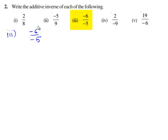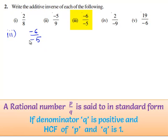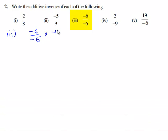The standard form of a rational number should contain a positive denominator. In order to make the denominator positive, we multiply both the numerator and denominator with minus 1. Now we get minus 6 times minus 1 gives 6 by minus 5 times minus 1 gives 5.